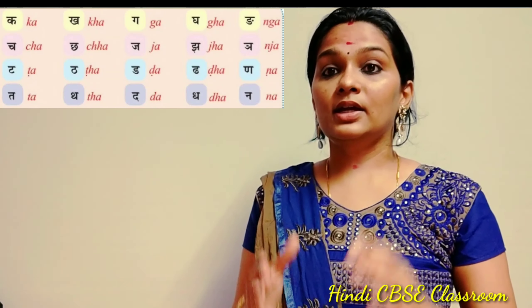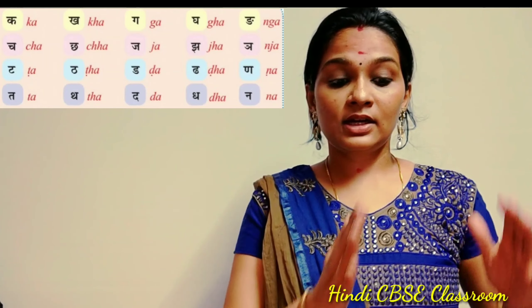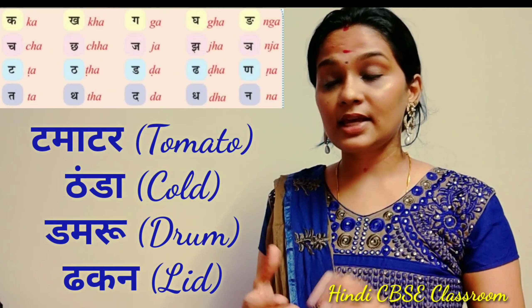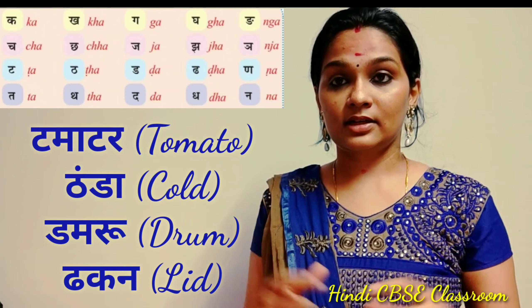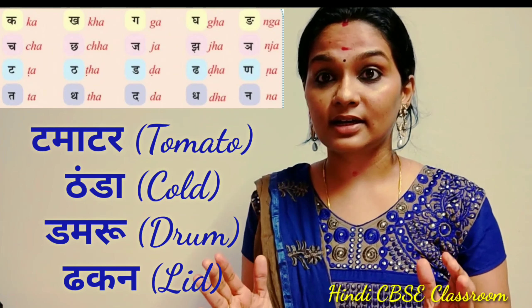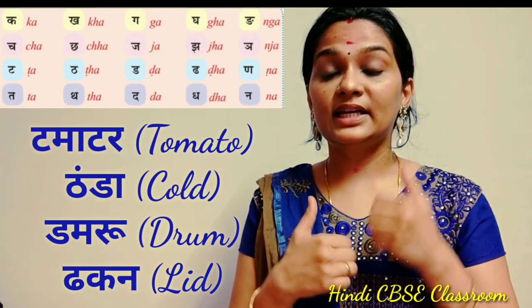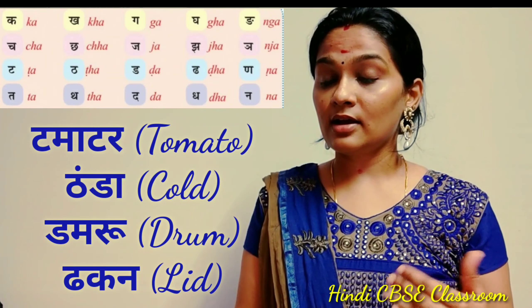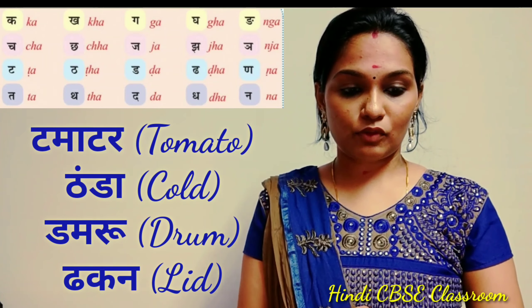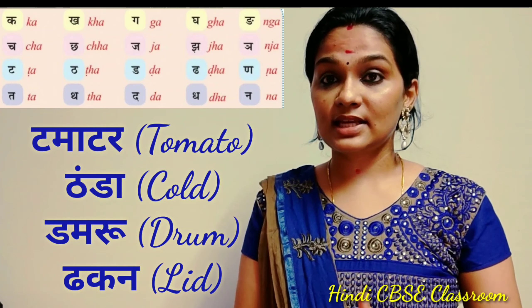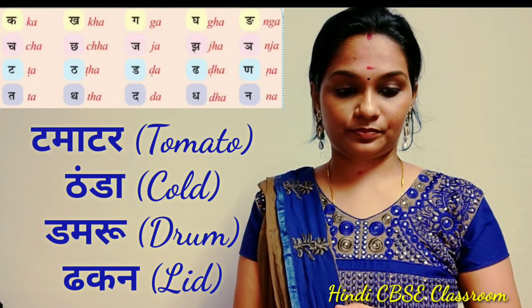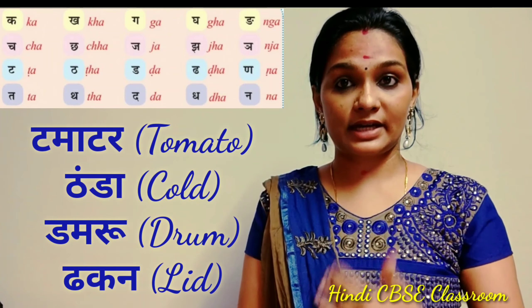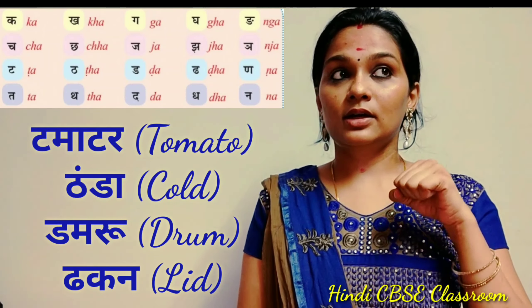Then what? Ta, Tha, Da, Dha, Na. Ta for Tamatar (tomato), Tha for Thanda (cool/cold). Da for Damru (drum), Dha for Dhakkan (lid).